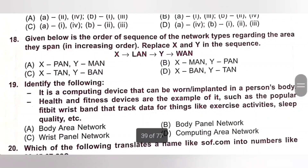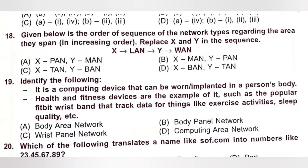Eighteenth. Given below is the order of sequence of network types regarding the area they span in increasing order. Replace X and Y in the sequence. Options: A. X-PAN, Y-MAN; B. X-MAN, Y-PAN; C. X-TAN, Y-BAN; D. X-BAN, Y-TAN. The order is: PAN — Personal Area Network, then LAN — Local Area Network, then MAN — Metropolitan Area Network, then WAN — Wide Area Network. So X is PAN and Y is MAN. Option A is the correct answer.